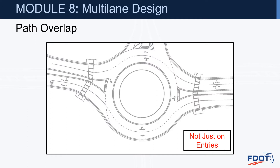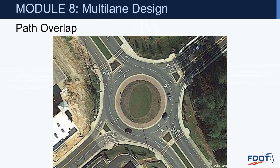Path overlap isn't just on entries — it can also occur on exits. The vehicle in the right lane experiences quite a bit of curvature on this particular exit and would stay in their lane, but it would actually be easier for the vehicle on the inside lane to use that outside exit lane as well. We need to make it comfortable for vehicles to exit out of the roundabout, and the example shows how the vehicle on the left circulatory lane can more easily exit into the rightmost lane.